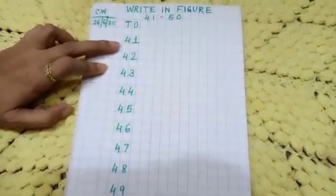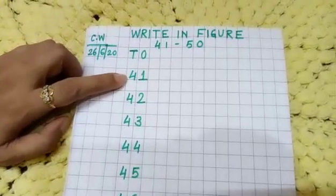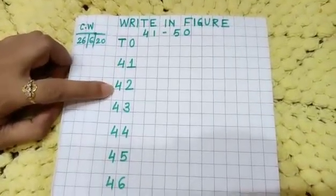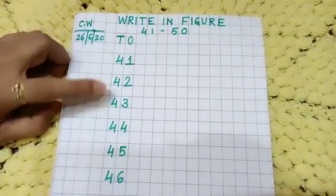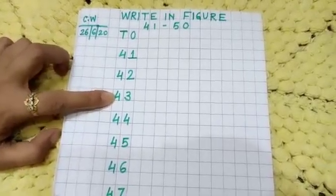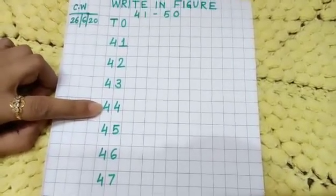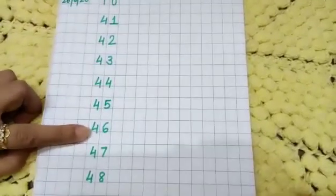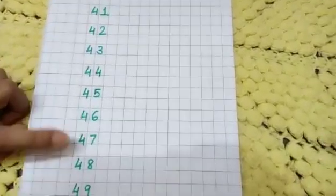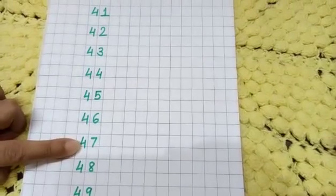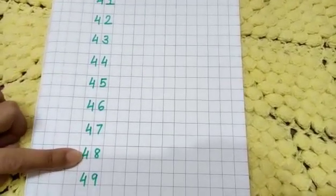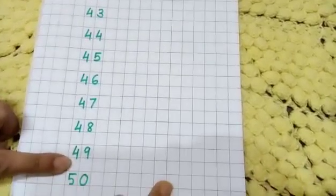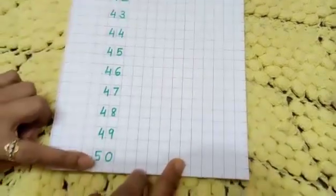4, 1, 41, 4, 2, 42, 4, 3, 43, 4, 4, 44, 4, 5, 45, 4, 6, 46, 4, 7, 47, 4, 8, 48, 4, 9, 49, 5, 0, 50.